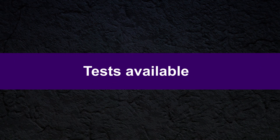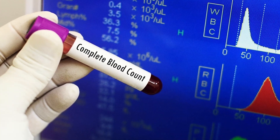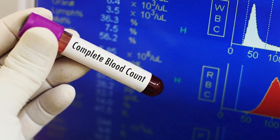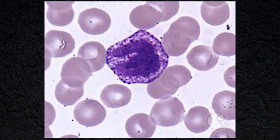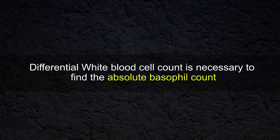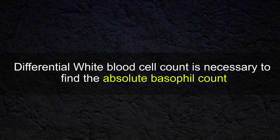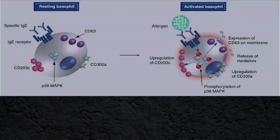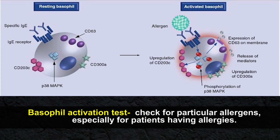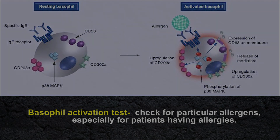Regarding tests available, clinicians may request a full blood count if they are looking at a person's basophil level. A differential white blood cell count is necessary to find the absolute basophil count. The basophil activation test is a specific test to check for particular allergens, especially for patients having allergies.